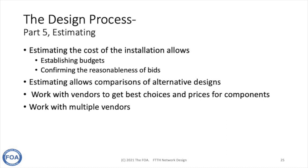An essential part of every network design is estimating the cost. Estimating the cost of the installation is generally done as early as possible in the process to establish budgets. Doing your own estimating can be extremely useful if you're trying to evaluate bids on the network to see if they are within reason of what you expect the network to actually cost. Estimating also allows comparisons of alternative designs — for example, centralized versus remote or cascaded splitter designs — to see which turns out to be more cost effective. You work with vendors to get the best choices and prices for components and can work with multiple vendors to get different options.